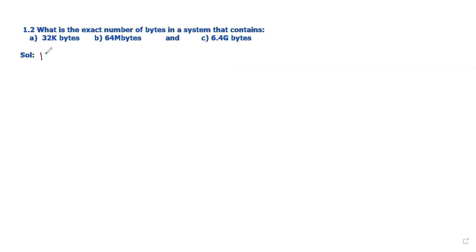1K equals 2 power 10, its equivalent value is 1024. 1 mega equals 1K into 1K, which equals 2 power 10 into 2 power 10, also equal to 2 power 20. Its equivalent value is 1048576.